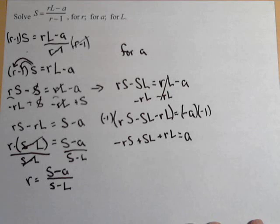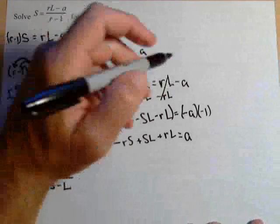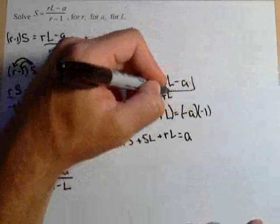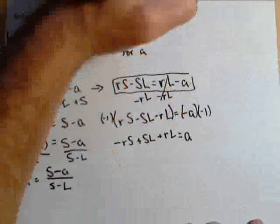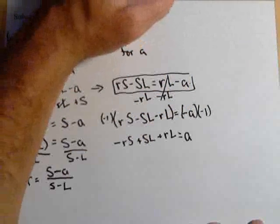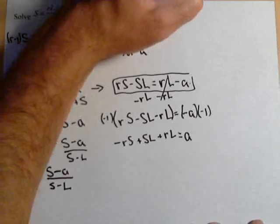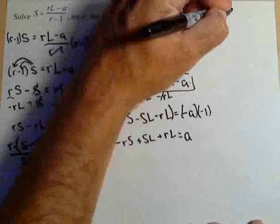Solving for L will be really similar. Let's go to this exact same step we had right here. So we're going to use this again. RS minus S equals RL minus A.